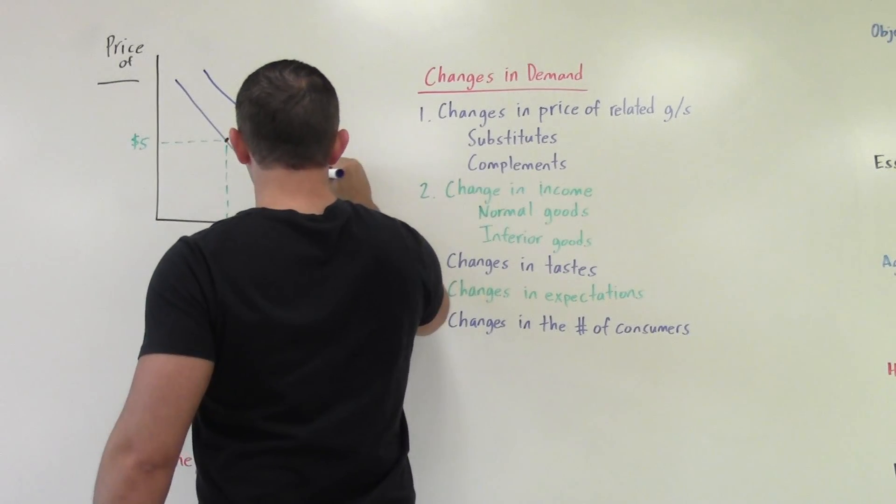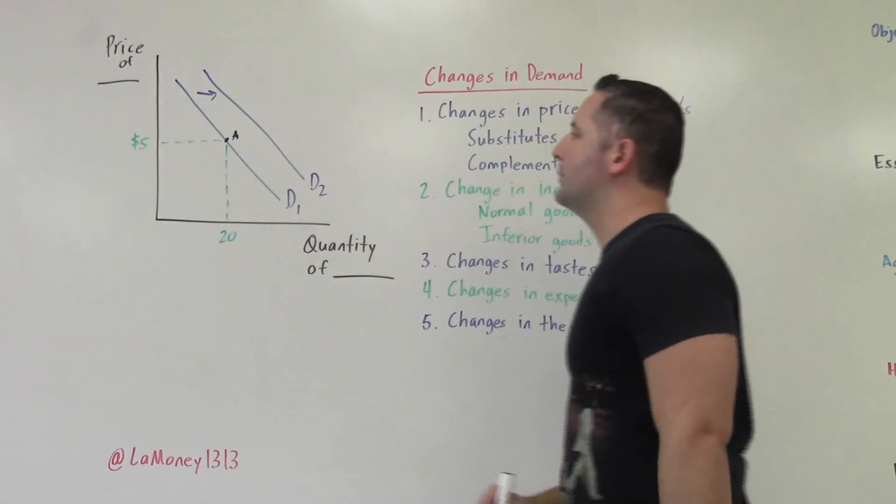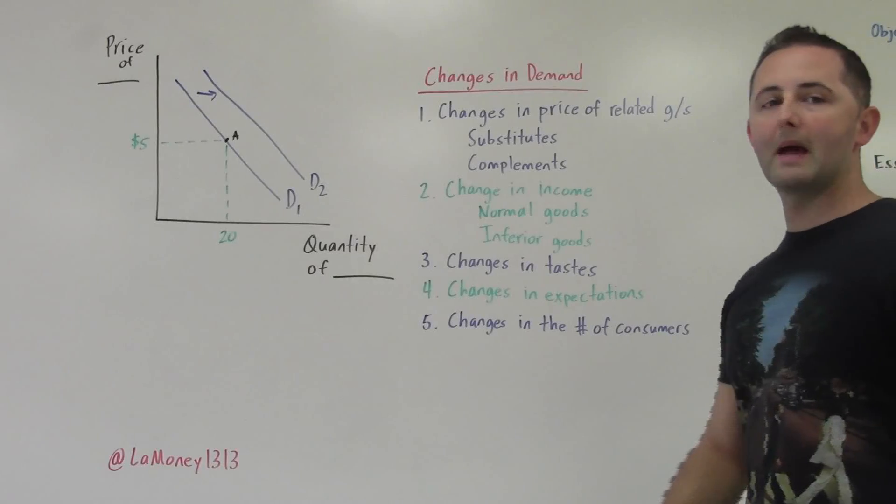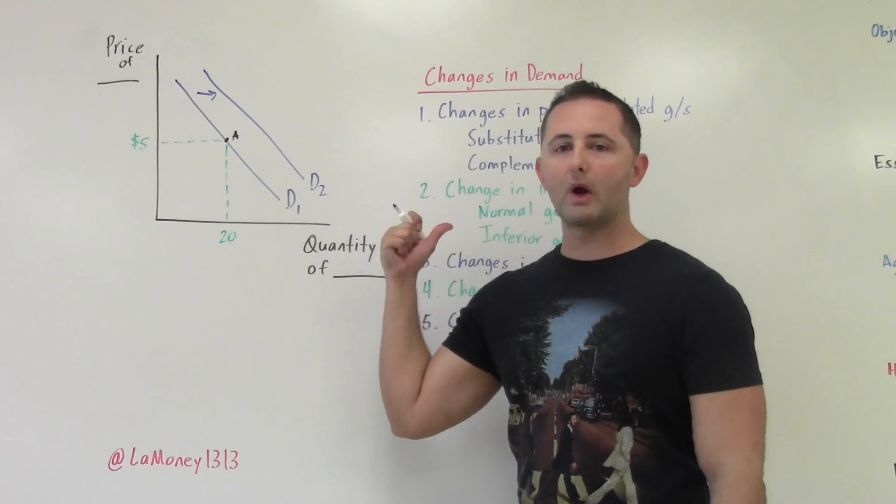So this is what an increase in demand would look like. We draw a second demand curve. It is still negatively sloping. Draw it like that to the right. That would be an increase in demand. So increase, shift right.